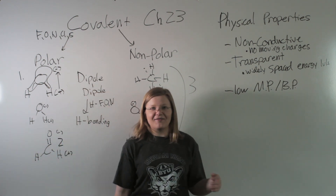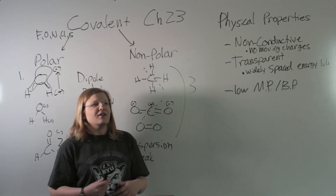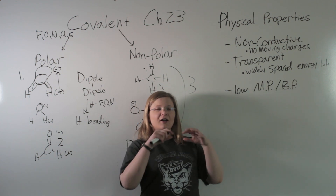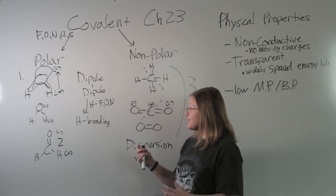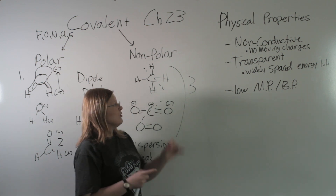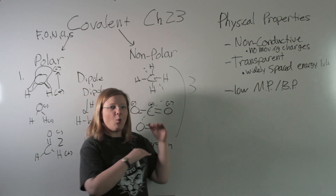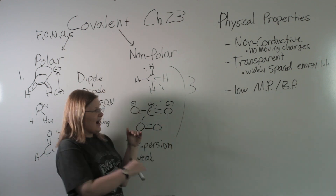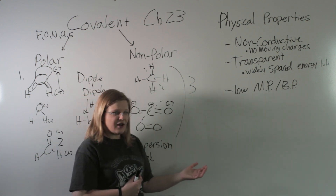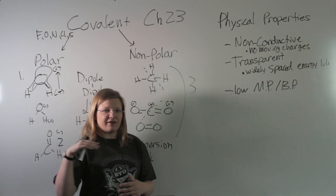Covalent materials are always nonconductive, transparent, and have low melting and boiling points relative to ionic and metallic bonding materials. They're nonconductive because there are no moving charges — all covalent molecules are neutral, electrons cannot jump between molecules, and there are no ions that can move. Covalent materials are also transparent because they have widely spaced energy levels, and visible light does not have enough energy to promote an electron to the next energy level, so the electron cannot absorb it and just lets it pass straight through.